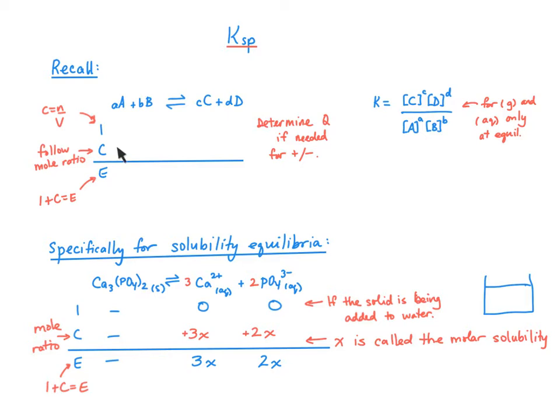And whether you are adding or subtracting in the change row depends on if you had zero in any of the reactants or products. So, if you had zero over here, then definitely we're adding here and subtracting on this side. If we had zero on this side, we would be adding here in the change row and subtracting on the left. And if you don't have zero anywhere, if you have starting concentrations of all of these entities, then you'll need to determine Q.